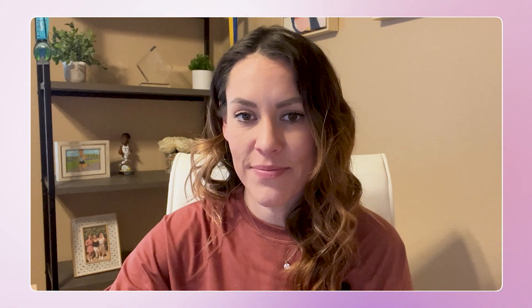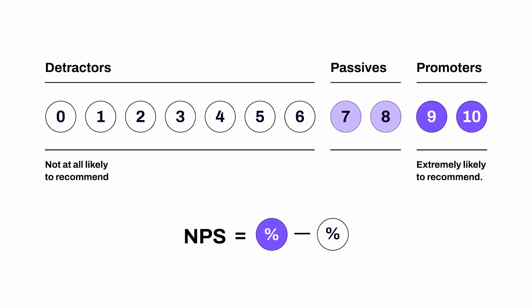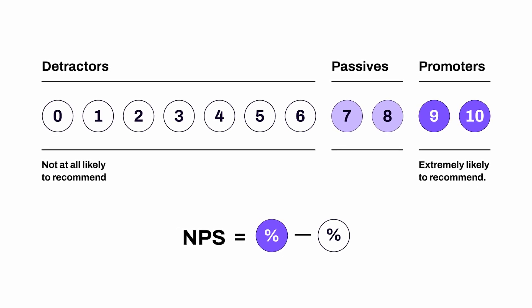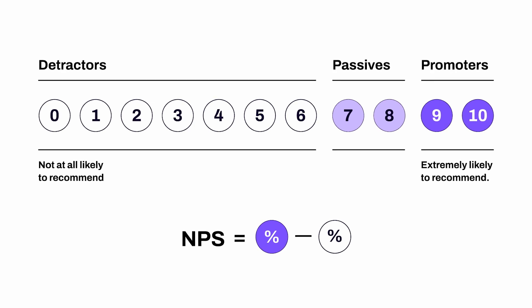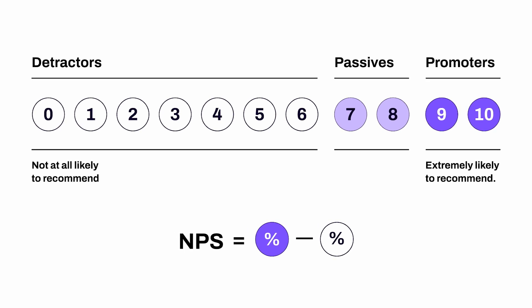Aside from using CSAT to measure customer satisfaction, another metric that businesses may use is NPS, which stands for Net Promoter Score. NPS is a measure of how likely customers are to recommend your product or service to others on a scale of 0 to 10. Those who select 9 or 10 are your promoters, whereas those who select 6 or less are your detractors. To calculate your NPS, you simply subtract the percentage of detractors from the percentage of promoters. The resulting number will be on a scale of negative 100 to 100, so an NPS of 100 means 100% of survey respondents are promoters.